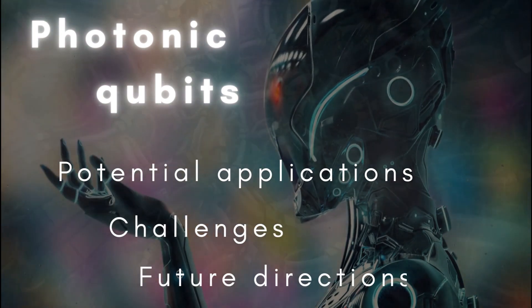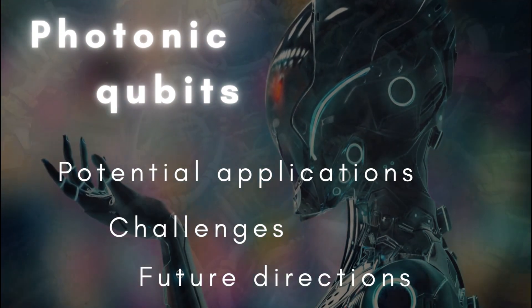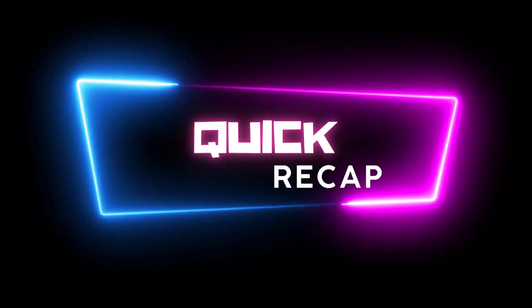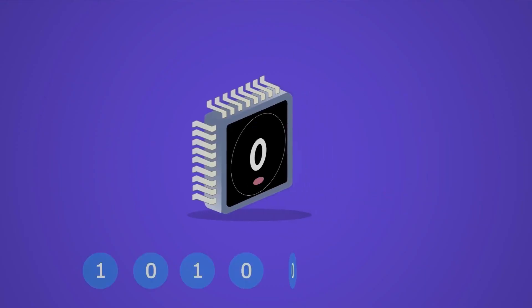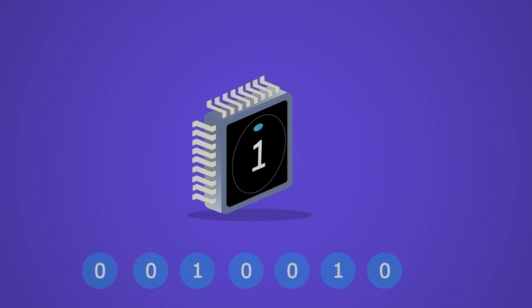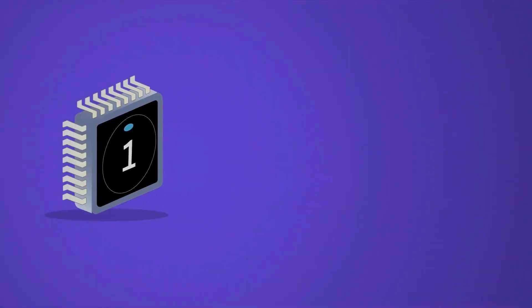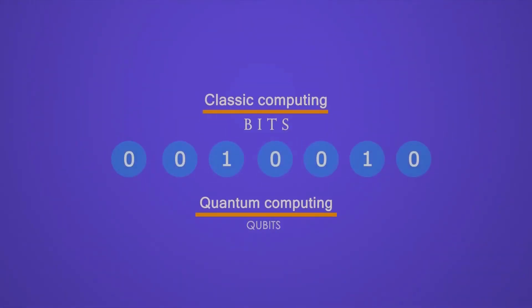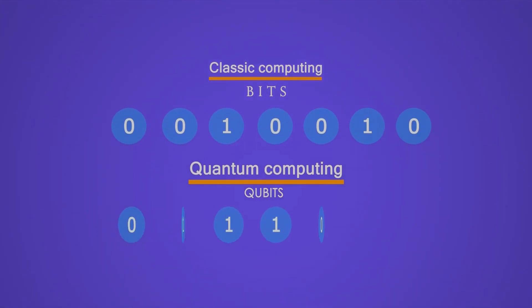First, a quick recap. In classical computing, bits are the basic units of information represented as zeros and ones. However, in the world of quantum computing we have qubits, which can exist in a superposition of states, allowing for complex computations beyond classical capabilities.